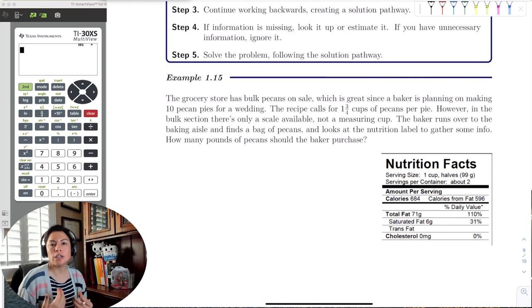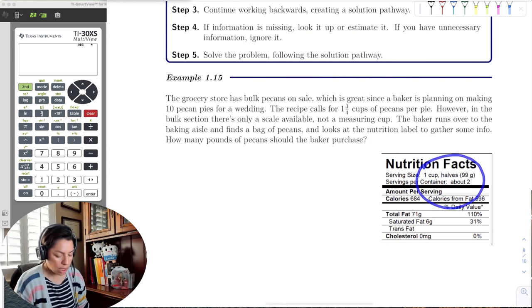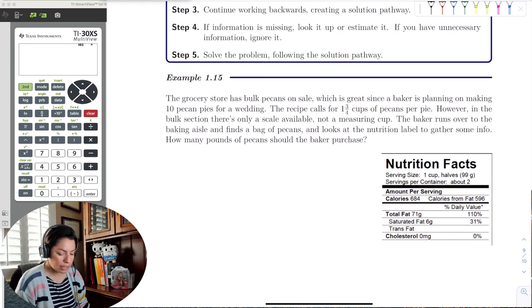So the baker runs over to the baking aisle and finds bags of pecans to look at the nutrition label. It's not very cost efficient for a baker who's going to bake 10 pies to just buy individual bags when they need a lot. They need bulk, bags and bags. So here we're going to look at the nutrition label.